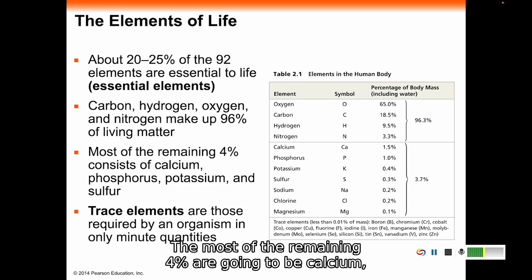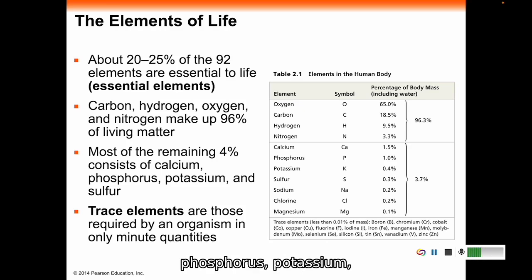Most of the remaining 4% are calcium, phosphorus, potassium, sulfur, sodium, chlorine, and magnesium. Some of these are very tiny. Trace elements, less than 0.01% of mass, include boron, chromium, cobalt, copper, fluorine, iodine, iron, manganese, molybdenum, selenium, silicon, tin, vanadium, and zinc.